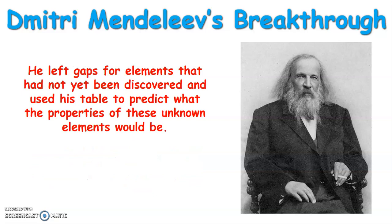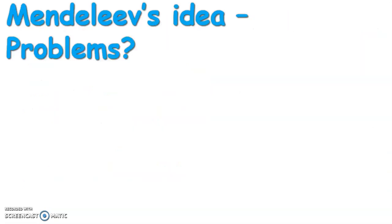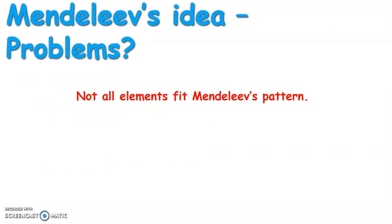Using his table, Mendeleev could predict the properties of undiscovered elements that might fill those gaps. One example is gallium — a metal with a very low melting point — whose properties he predicted before it was ever discovered. When gallium was eventually discovered, it had almost exactly the properties he had predicted, which completely backed up his idea. When the gaps were filled, the properties of those newly discovered elements matched his predictions.